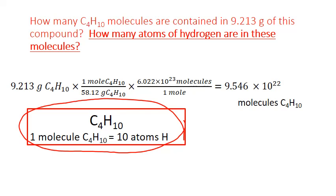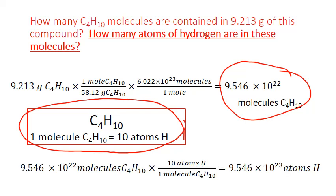So, for example, I can take my end point, my number of molecules, and I can multiply it by one last conversion factor made from the subscripts of the formula. 9.546 times 10 to the 22nd molecules of butane times 10 atoms of hydrogen from its subscript in the formula for every one unit of the formula, one molecule. And that gives me 9.546 times 10 to the 23rd atoms of hydrogen.